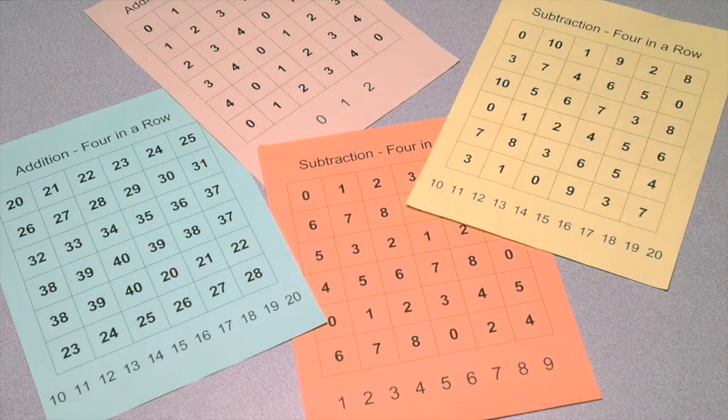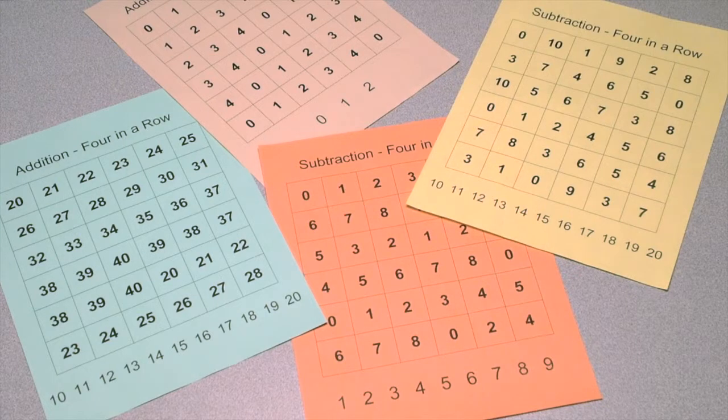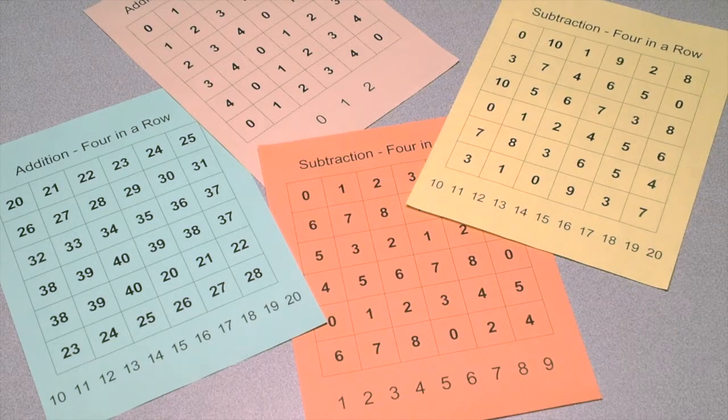Teachers can differentiate this activity by choosing cards from the bundle resources that match the different levels in their class. Cards can be copied on colored paper to keep them organized. Included in this bundle are cards for one-digit addition, one-digit subtraction, two-digit addition, and two-digit subtraction.